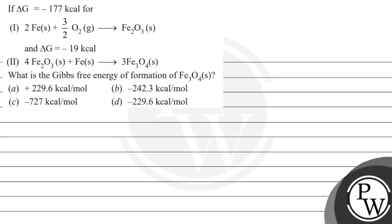Hello. Let's read this question. If delta G equals minus 177 kilocalorie for this reaction and delta G equals minus 19 kilocalorie for this reaction, what is the Gibbs free energy for formation of Fe₃O₄ solid? These are the following options given to us.